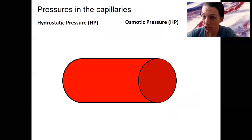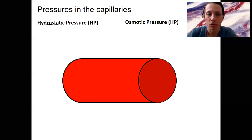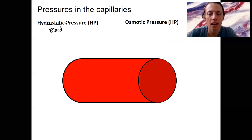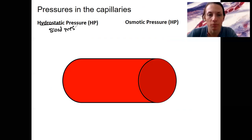When I say blood pressure, that's actually hydrostatic pressure — the pressure of water literally pushing inside a vessel. So when we said blood pressure, systolic over diastolic, MAP — all of that is hydrostatic pressure, abbreviated HP.